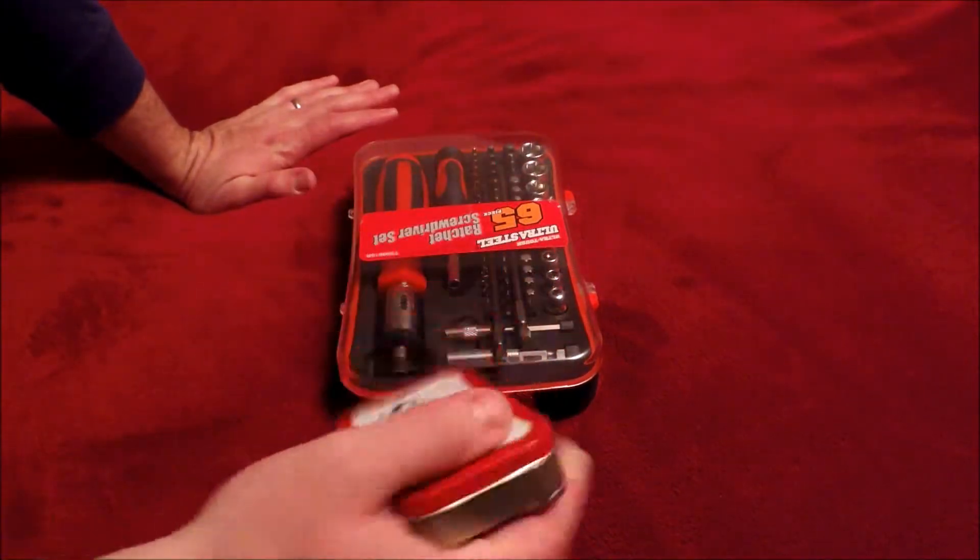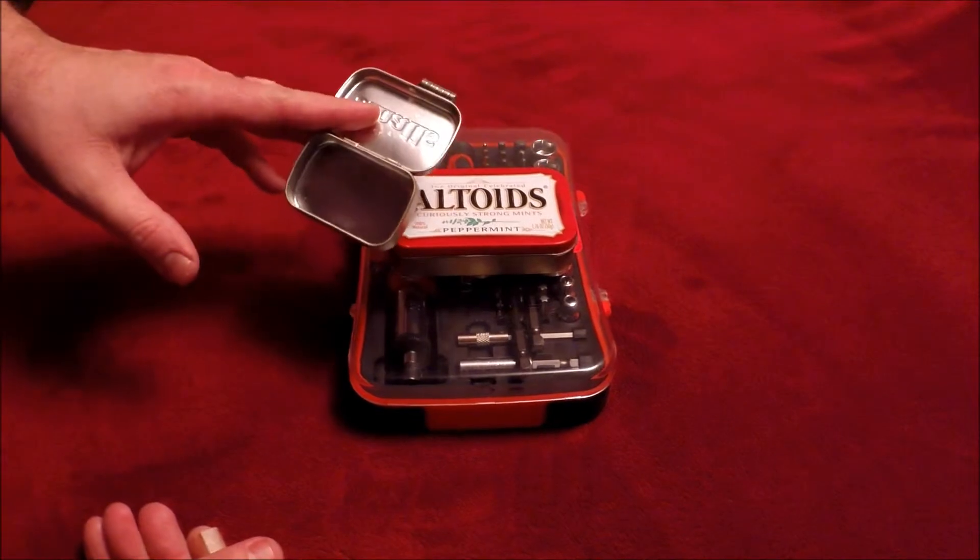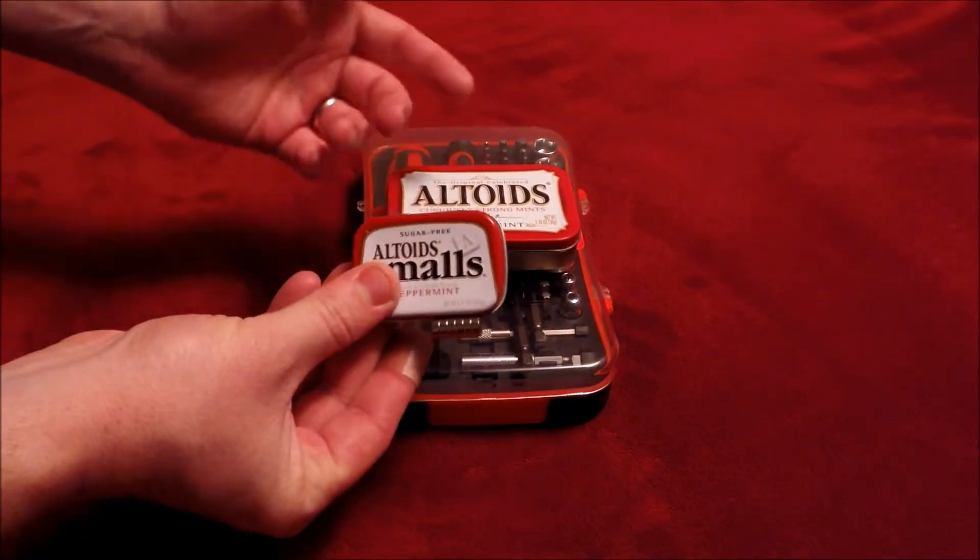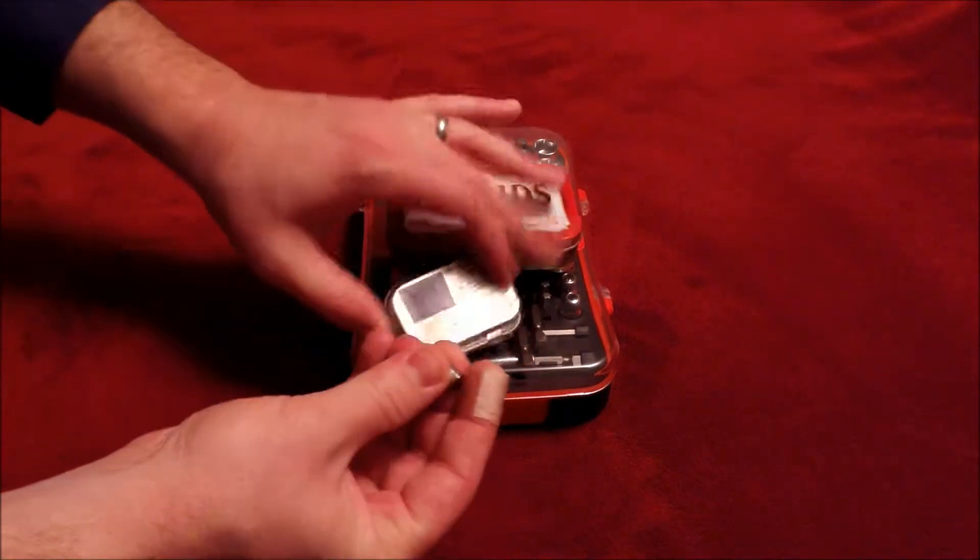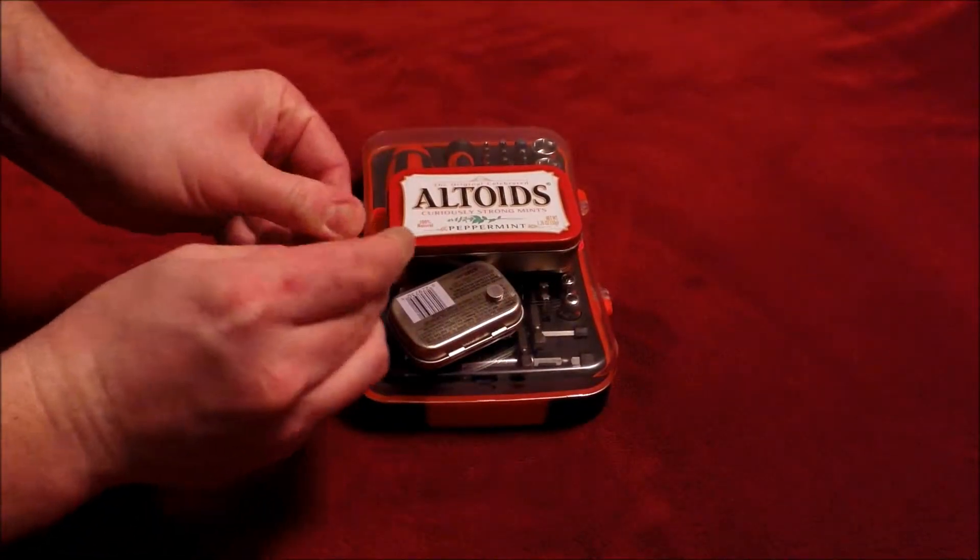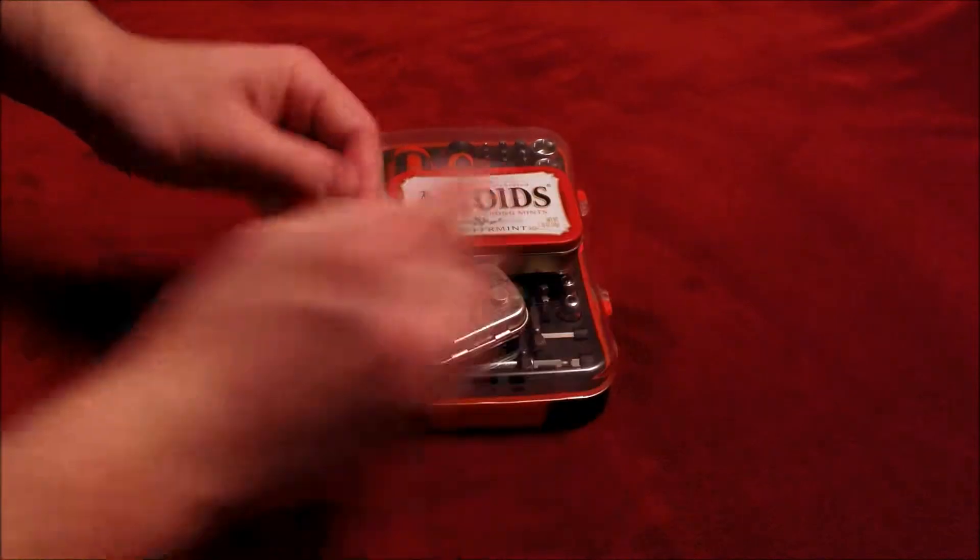If you wanted to make a small Altoids little small tin, you can make it. It'd be just the same thing, you just get some little magnets and you just pop them off, set them on the bottom of it, you could configure it however you want.